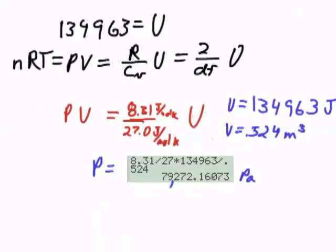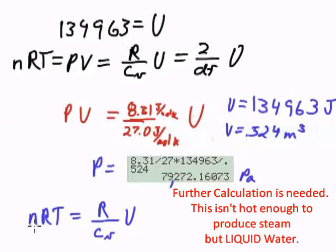But what about the temperature? Temperature will have NRT equals R over C sub V U. So we can cancel out the R's.